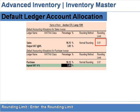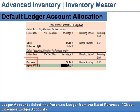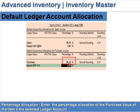At 'Rounding Limit,' enter the rounding limit. For purchase account allocations, at 'Ledger Account,' select the purchase ledger from the list of purchase or direct expenses ledger accounts. At 'Percent Allocation,' enter the percentage allocation of the purchase value of the item to the selected ledger account.